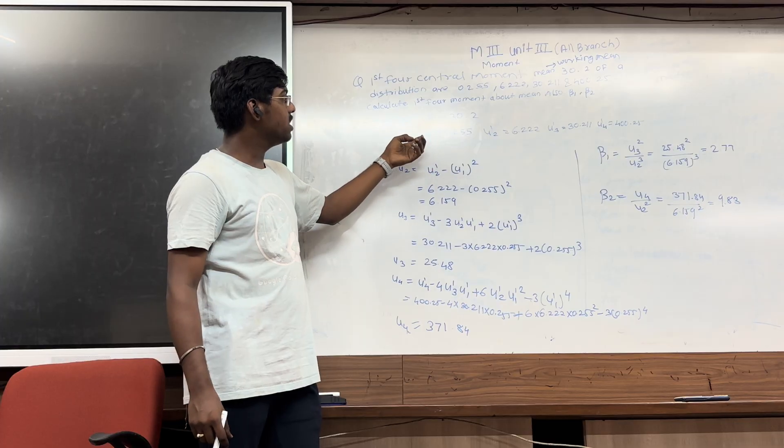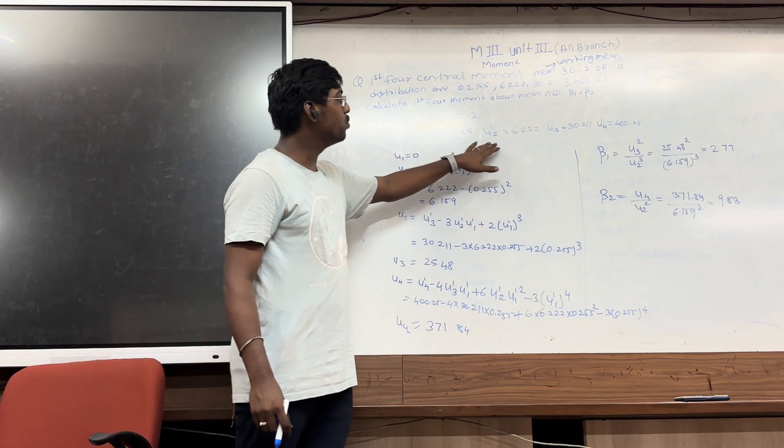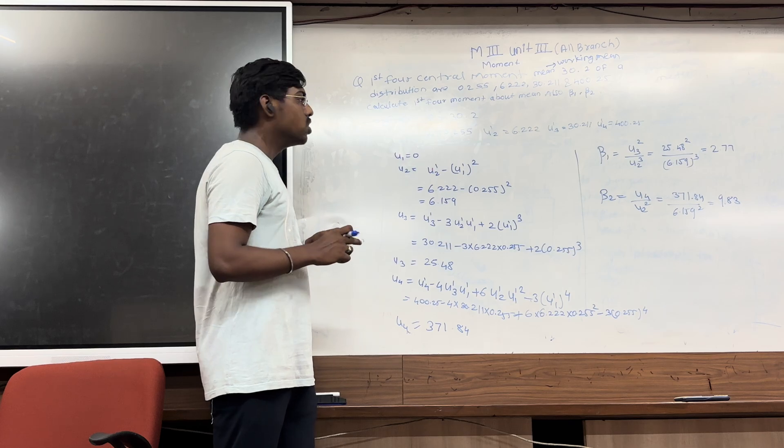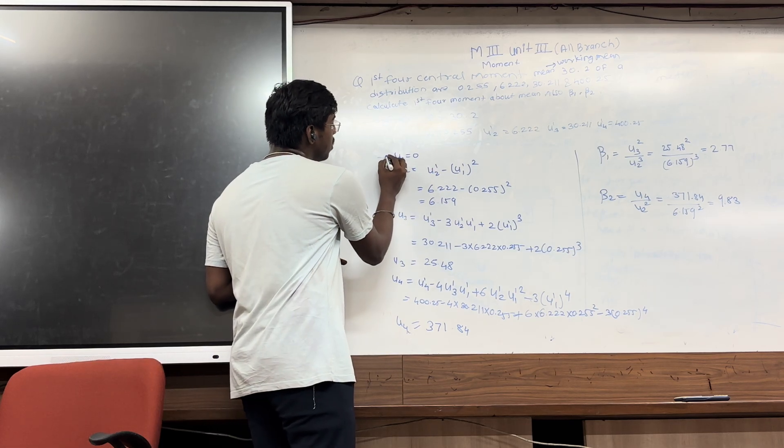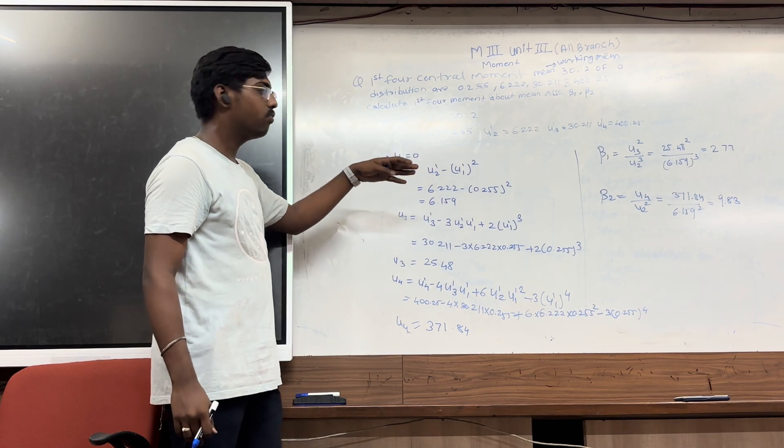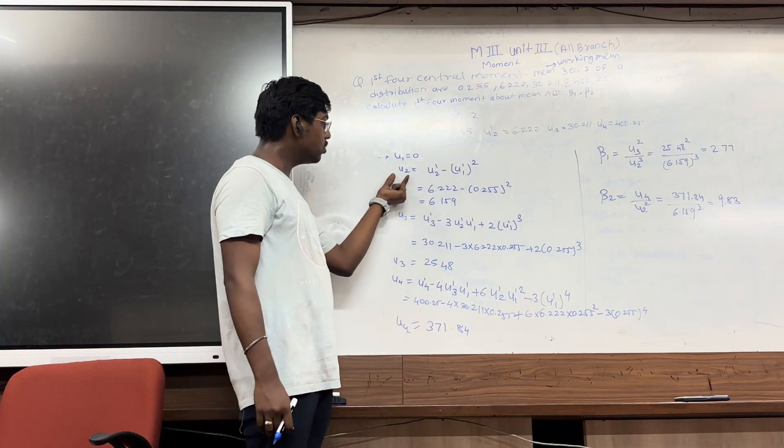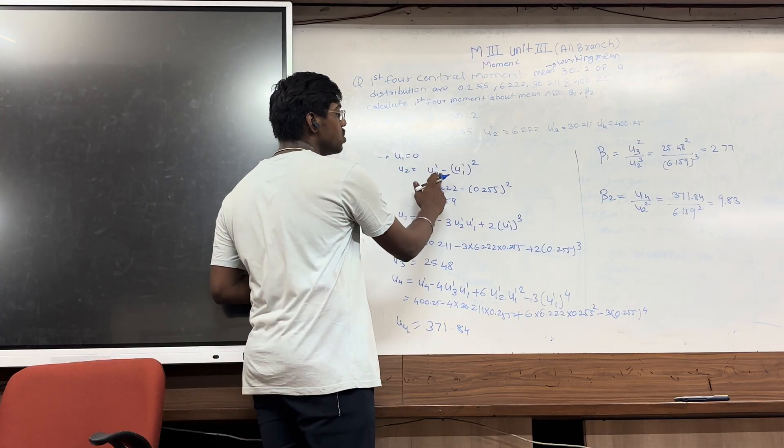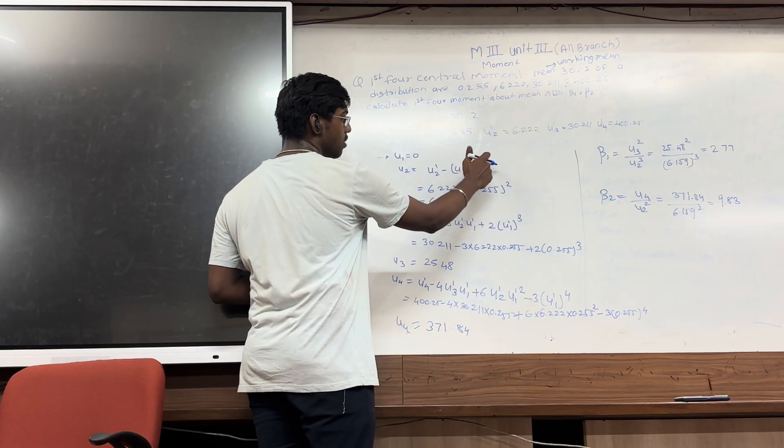So it is mu1 dash, mu2 dash, mu3 dash, and mu4 dash as given in the question. So mu1 is also 0 for all conditions. And for the determined mu2, the formula is mu2 dash minus mu1 dash squared.